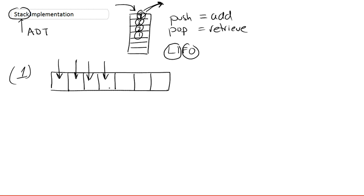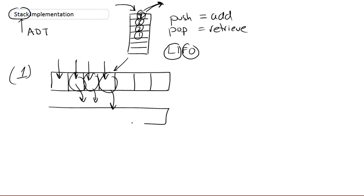Whenever you want to pop an element, you would go to the end of the list, and wherever there's an element you would pull it out — that's popping. The only problem we might have is: what if we get to the point where we fill out our entire array? We put elements in until we fill the entire array, and then we want to push more elements. What do we do?